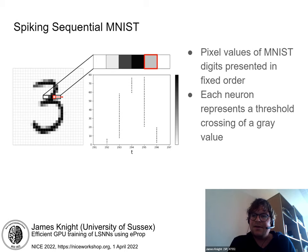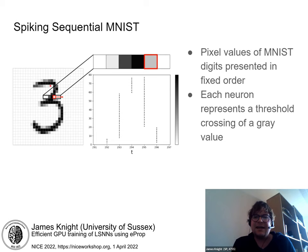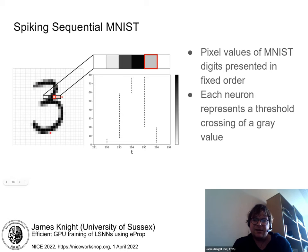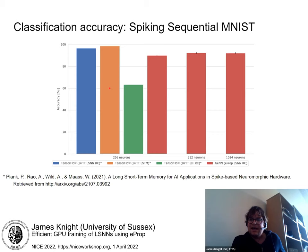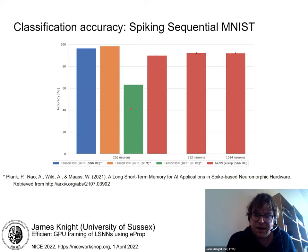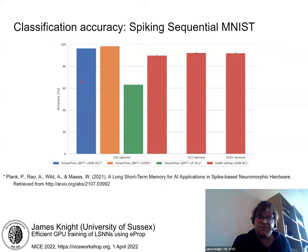We also looked at the Spiking Sequential MNIST dataset, where instead of each neuron representing one pixel, you raster-scan across the digit and each neuron represents a threshold — neurons fire when their threshold is hit by a pixel value. This is quite a tricky problem requiring long temporal memory. Comparing GeNN E-PROP (red bars) against LIF models trained in TensorFlow, LSTMs in TensorFlow, and recurrent adaptive LIF networks in TensorFlow: E-PROP isn't quite as good but still achieves around 90%, and performance increases with more neurons — reasonably competitive.